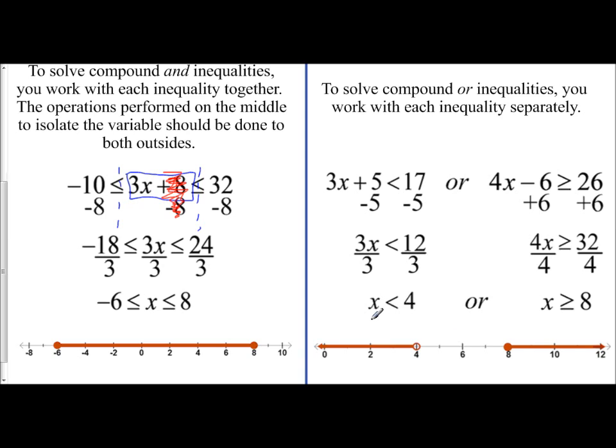To graph, you just look at them both together. You have x is less than 4. So you put an open circle on 4. You have your solution arrow going to the left. x is greater than or equal to 8. Closed circle on 8. Solution arrow to the right.